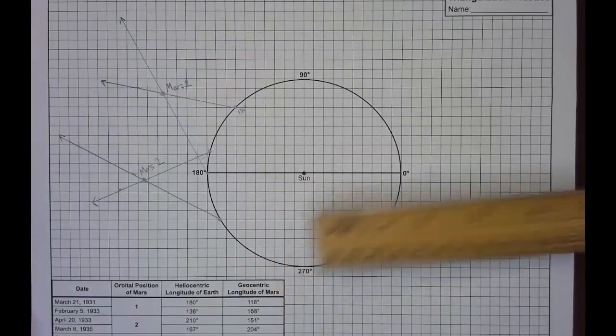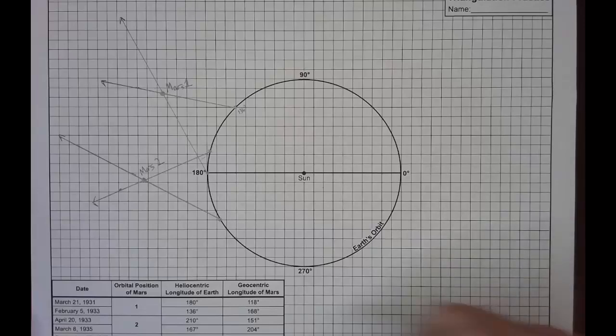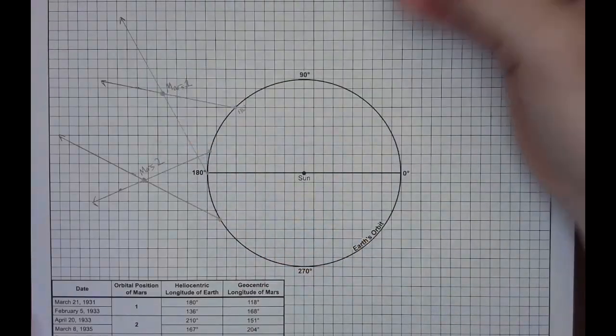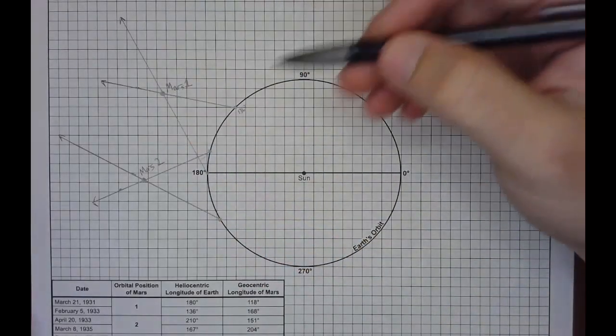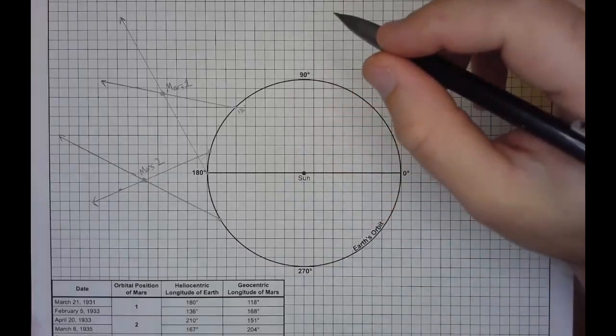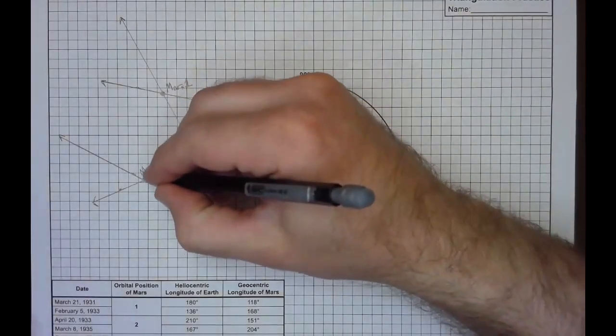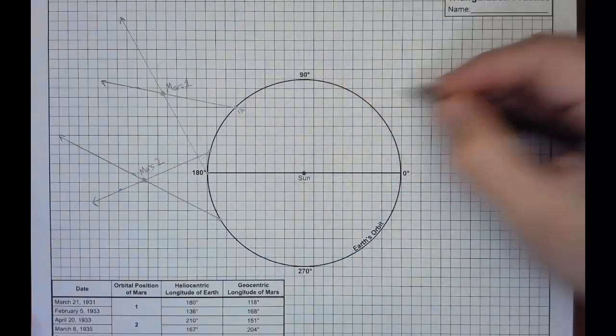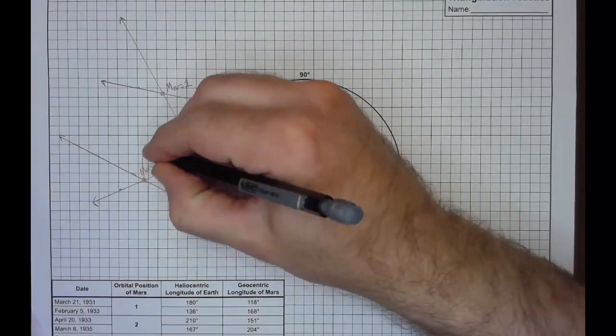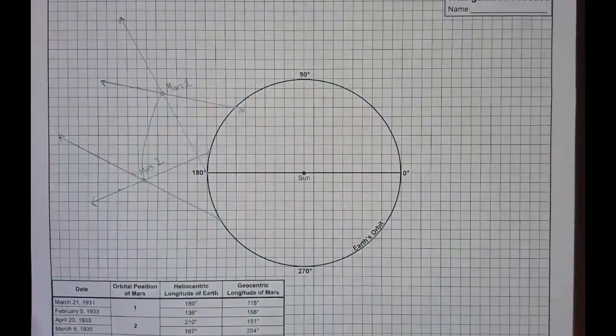So if you wanted to reconstruct the orbit of Mars, you would need many more points than this. This isn't all that helpful just with these two points, but it is good practice for triangulation. And if you were to plot more points, you would be able to approximate the elliptical orbit of Mars.